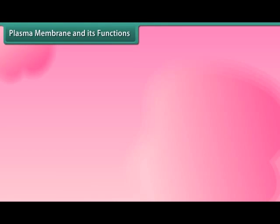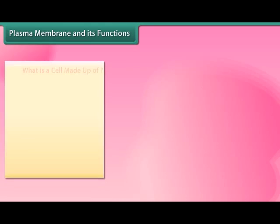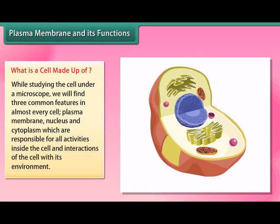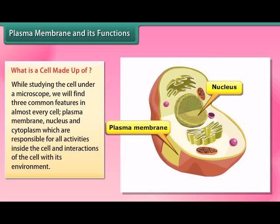What is a cell made up of? While studying the cell under a microscope, we find three common features in almost every cell: the plasma membrane, the nucleus, and the cytoplasm. These three components are responsible for all activities inside the cell and interactions of the cell with its environment.